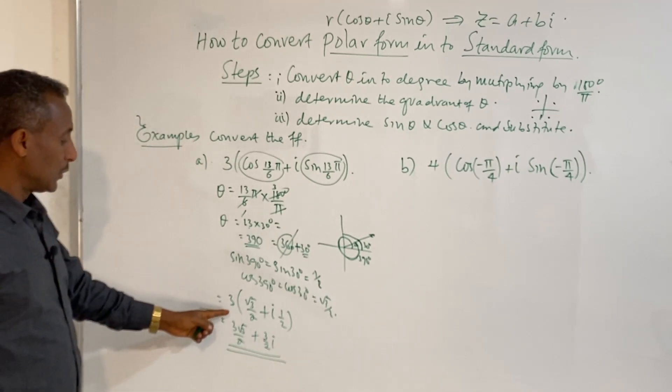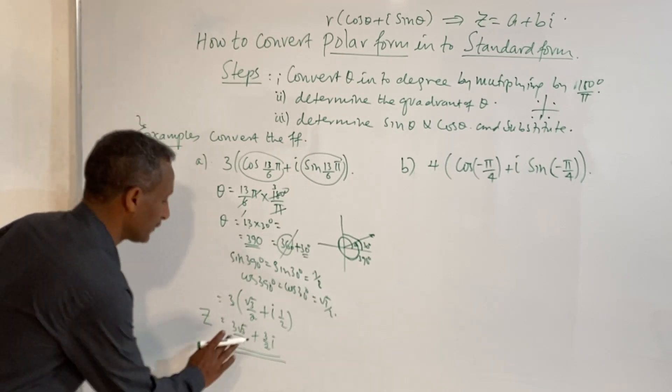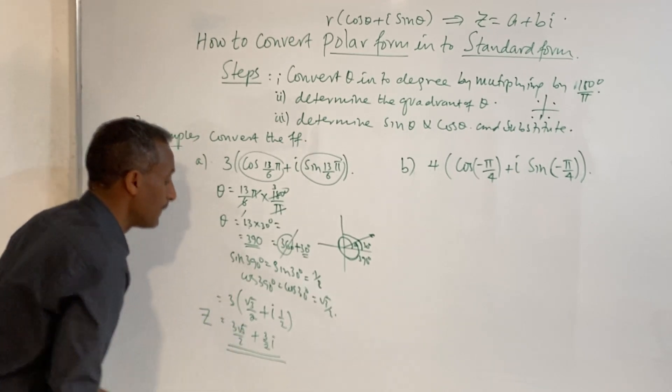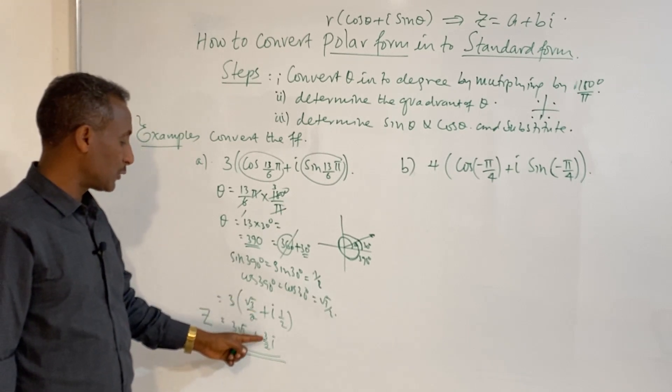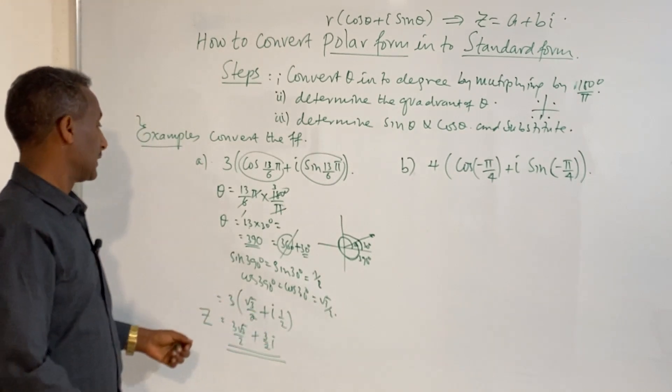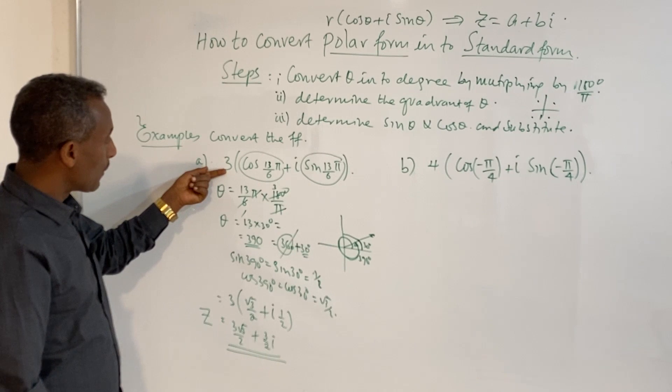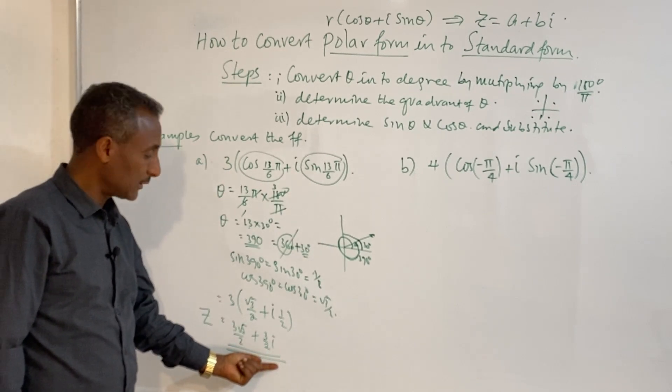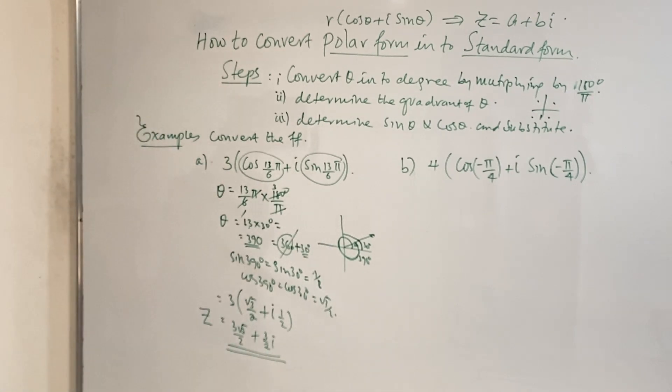This equals 3 root 3 over 2 plus 3 over 2 i. So this is our standard form. In this case, a equals 3 root 3 over 2, b equals 3 over 2. That's the polar form converted to standard form.